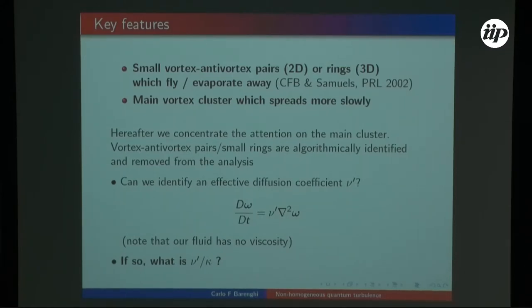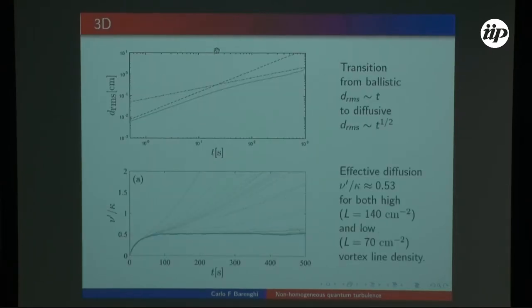We removed, we totally removed from the analysis the evaporating objects. Why? Because clearly, they obey some kind of different behavior. They move very fast. Once they move out, they do not collide with the rest of the vortices, exchange impulse. That's the physical reason. So we think we need to separate them out. This other graph shows what is the effective diffusion coefficient as we computed in units of the quantum of circulation. You see that nu prime divided by kappa seems to tend to 0.5.